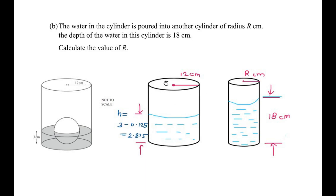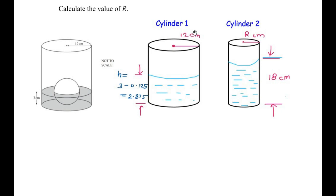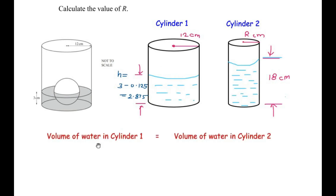The water from cylinder 1 is being moved into cylinder 2, so the volume of water in cylinder 1 equals the volume of water in cylinder 2 — we are just transferring it. We can write: volume of water in cylinder 1 = volume of water in cylinder 2, and since water takes the shape of the cylinder, we use the formula for volume of a cylinder for both sides.